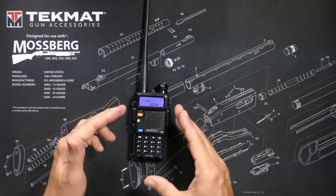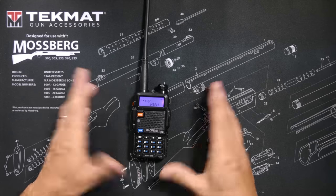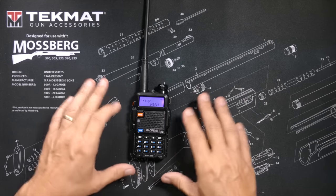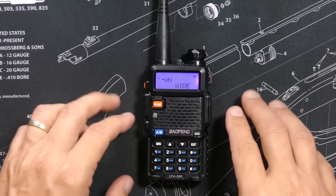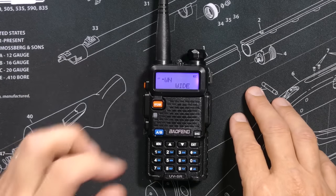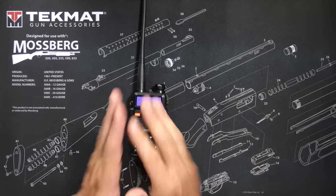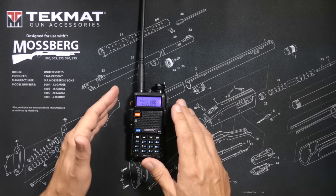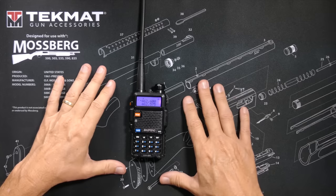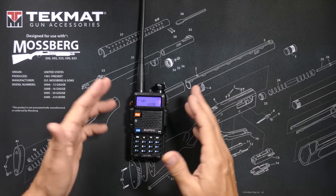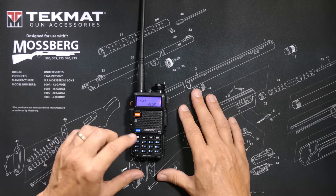You should only set TXP to high if the person you are trying to talk with says that you're coming in weak or fuzzy — and even then, setting it to high may not do much good. The next important menu setting is menu item number five: WN. This sets the radio to wide band or narrow band. It doesn't really matter which option you choose, as long as the other radio you are talking to is set the same way. If they sound funny or complain that you sound too low, try changing this setting.